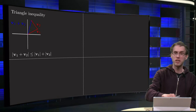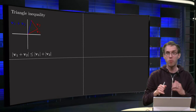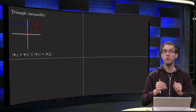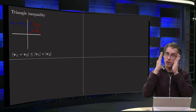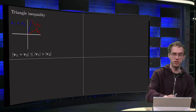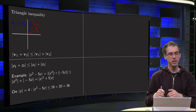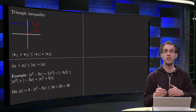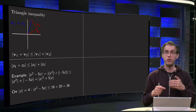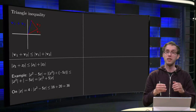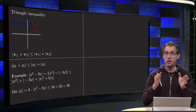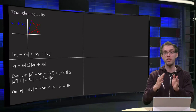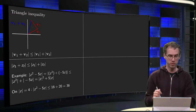So what does that mean for complex numbers? The norm of the vector v1 plus v2 is smaller than the norm of v1 plus the norm of v2. If we translate that to complex numbers, the norm of z1 plus z2 is smaller than the norm of z1 plus the norm of z2.